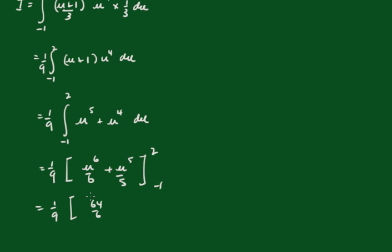And substituting these in: 2 to the 6th is 64 over 6, plus 32 over 5, minus 1 over 6, and then the negative 1 to the 5th becomes negative, so minus 1 over 5. And all that comes out on your calculator as 1.9.